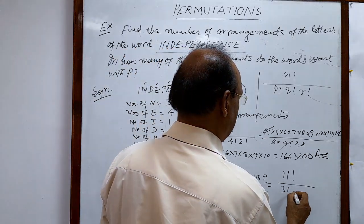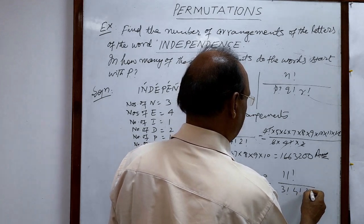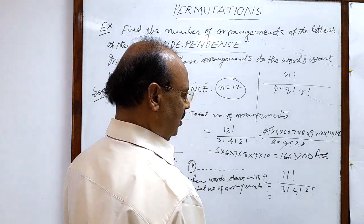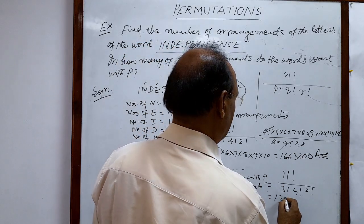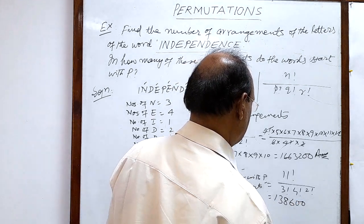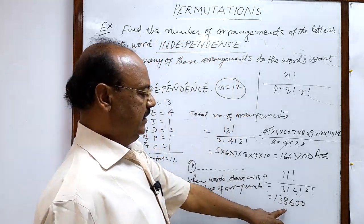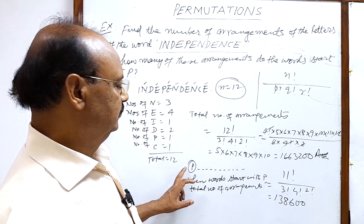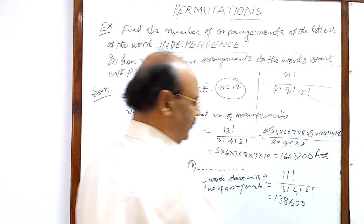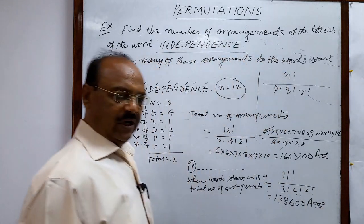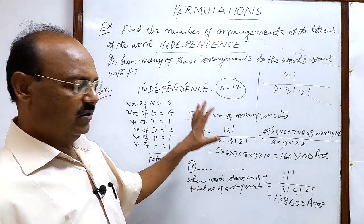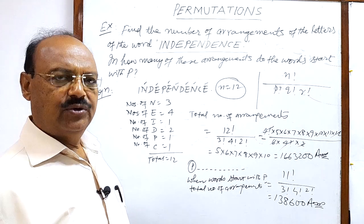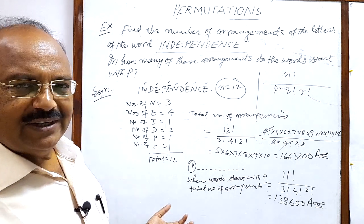After simplification, 1,38,600 arrangements can be made when words start with P. This is the answer to the second part. I hope you have got the solution and understood it well. I advise you to practice more so that you have a good command over this topic. Thank you very much for watching this video.